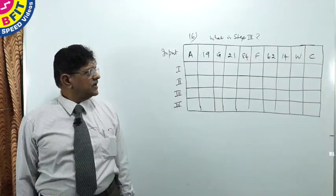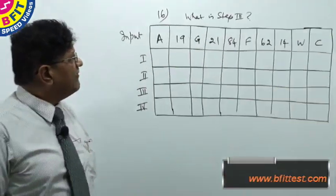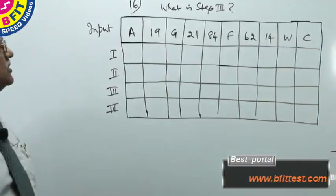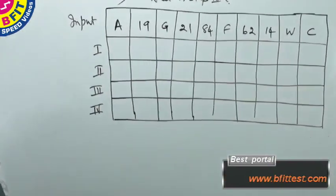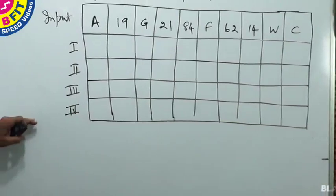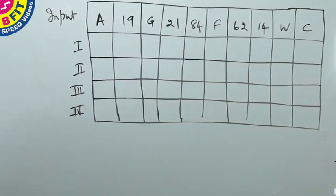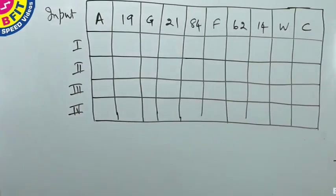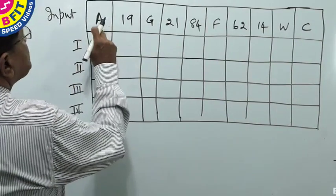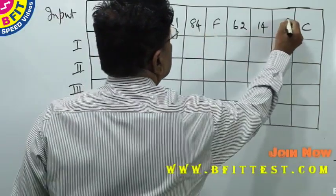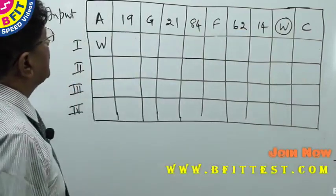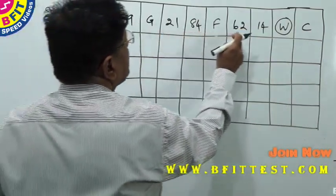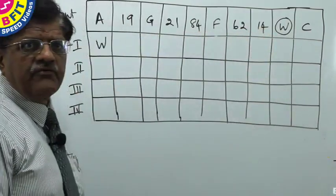Now I have already drawn the table and given the input to save time. The question is, what is step 3? We will have to find what should come here. The highest alphabet should come first. Among A, G, F, W, the highest is W. What should come next? The highest number among 19, 21, 84, 62, 14 is 84. So 84 should come here.